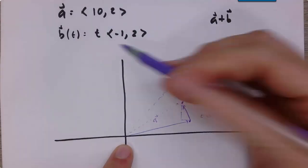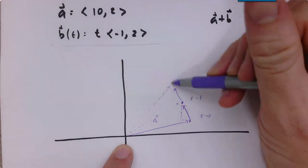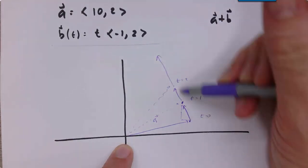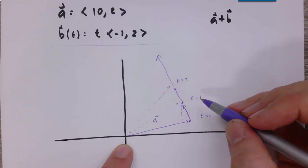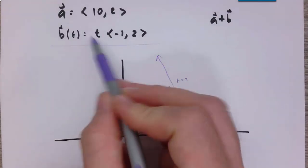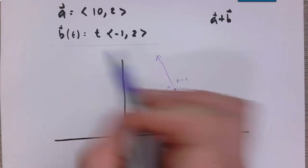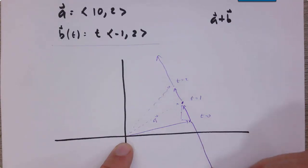And as we stretch this b vector longer and longer, it's going to take us in this direction. If we were going to have time be negative, let's imagine time is negative 1. That would flip b in the other direction. And so it would be tracing out this way.